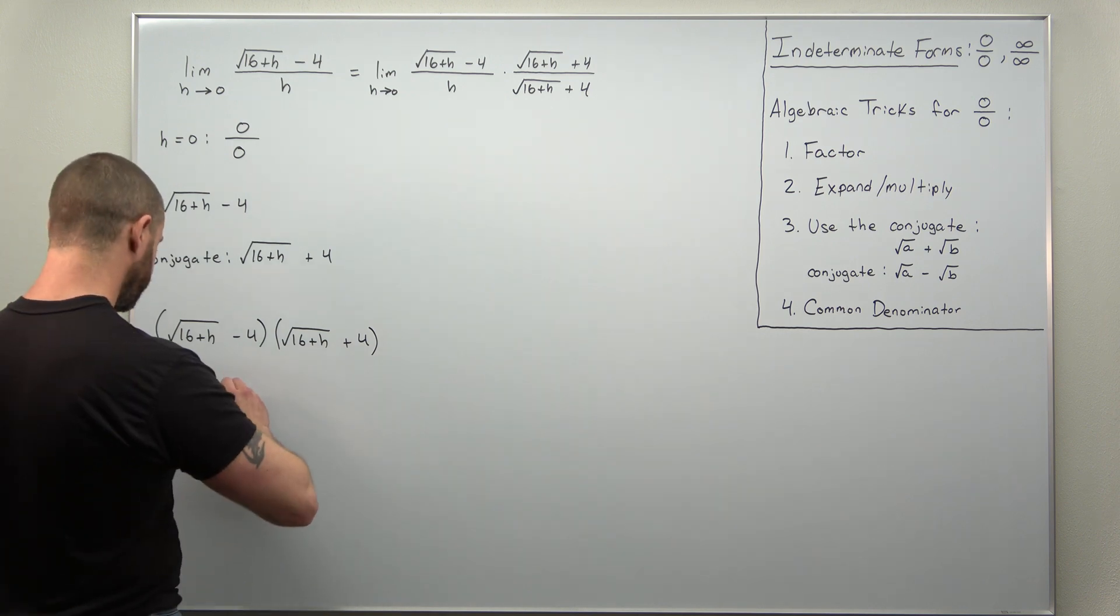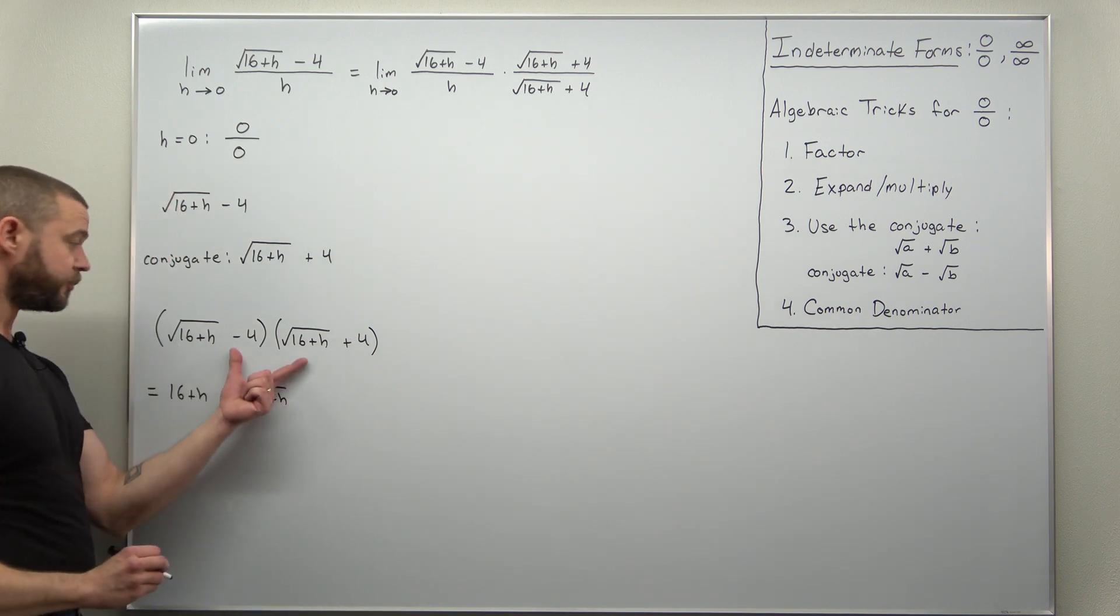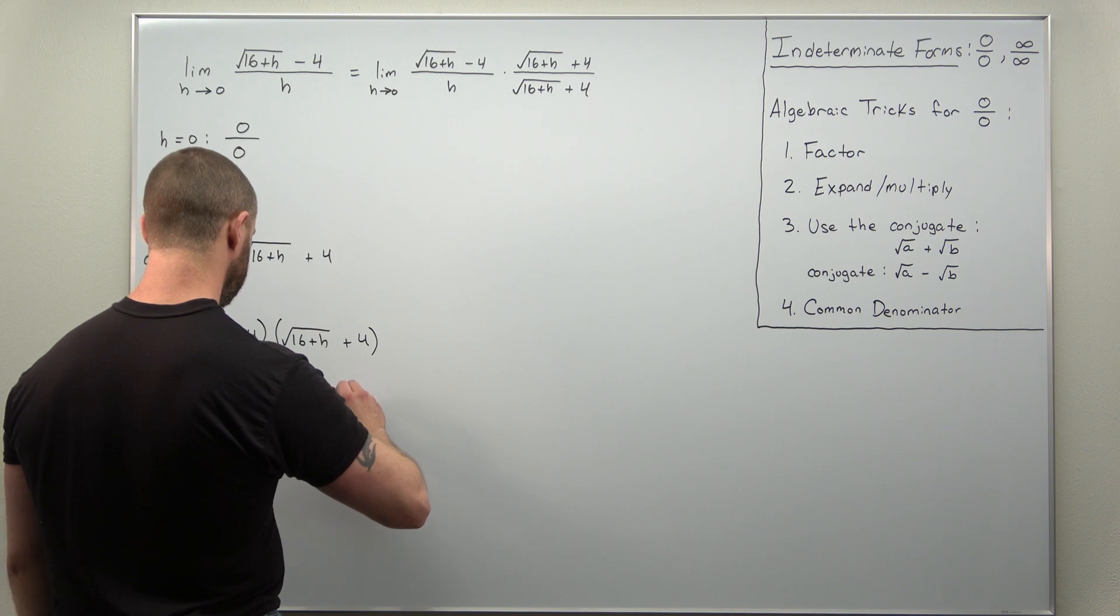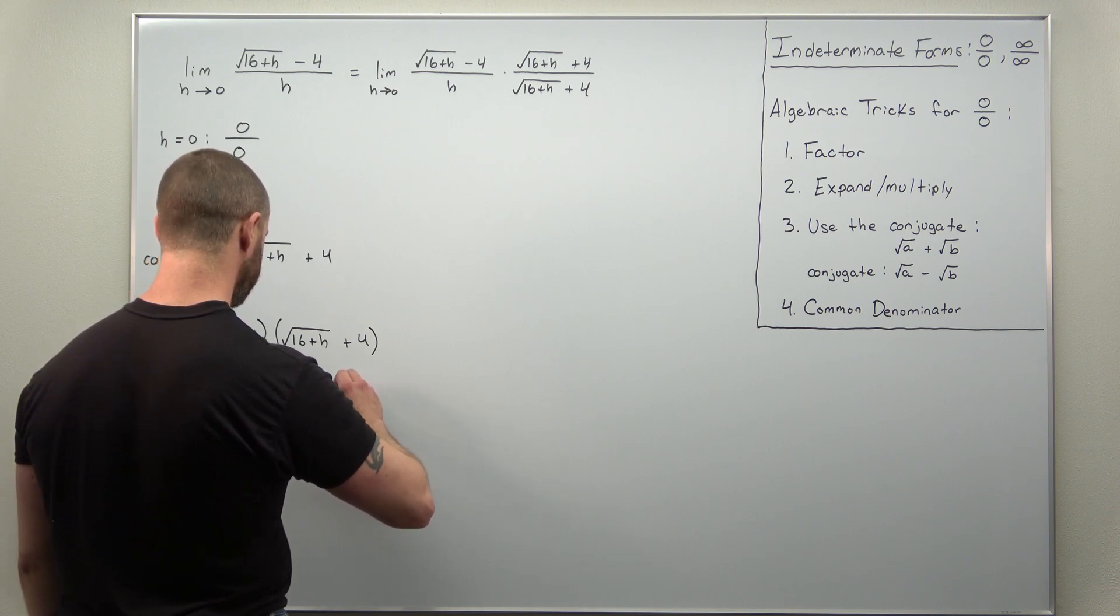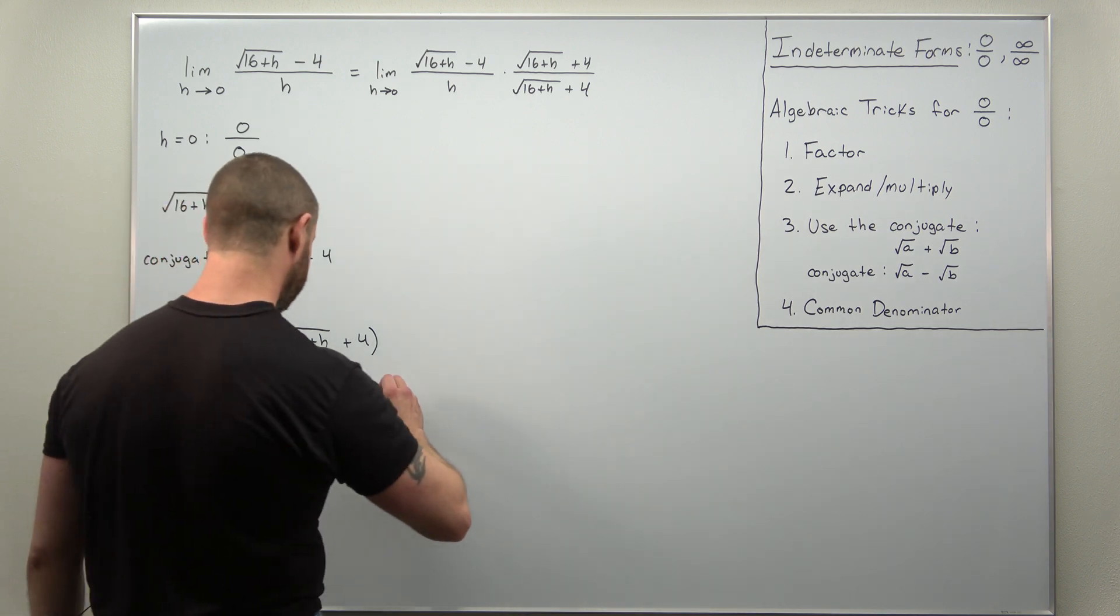You have your outers, plus 4 times the square root of 16 plus h. Your inners, minus 4 times the square root of 16 plus h. And don't forget multiplying the last terms. Those will come out to negative 16.